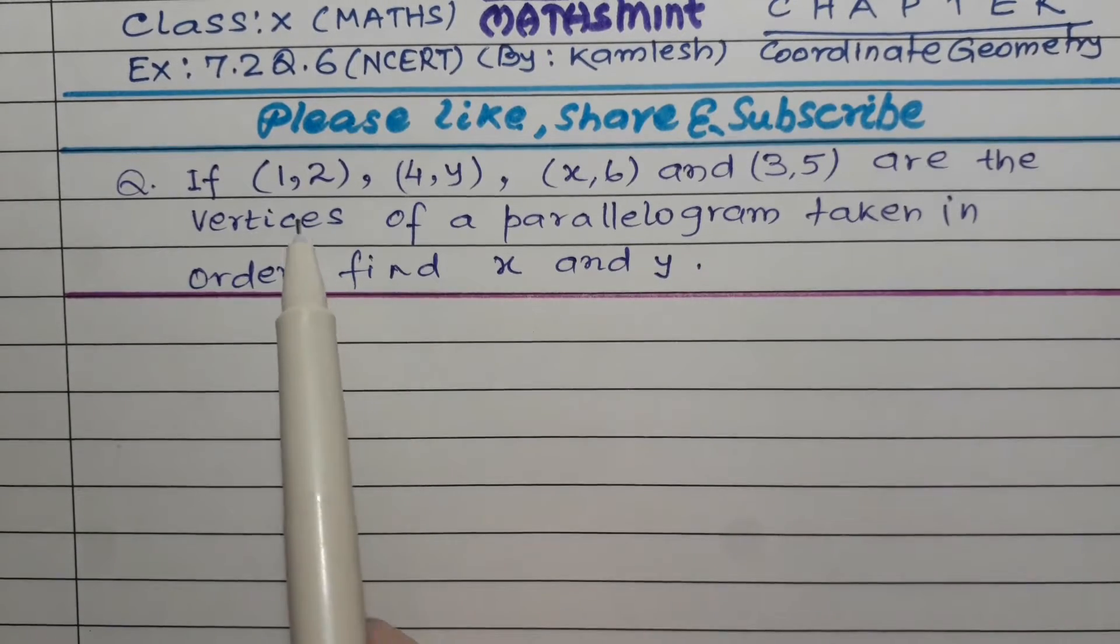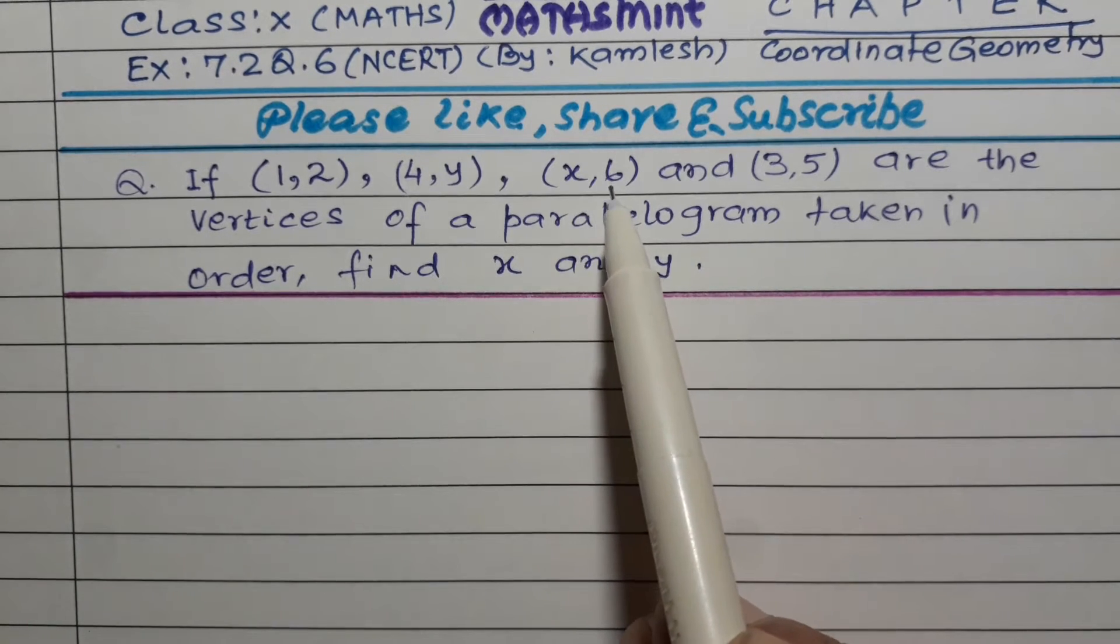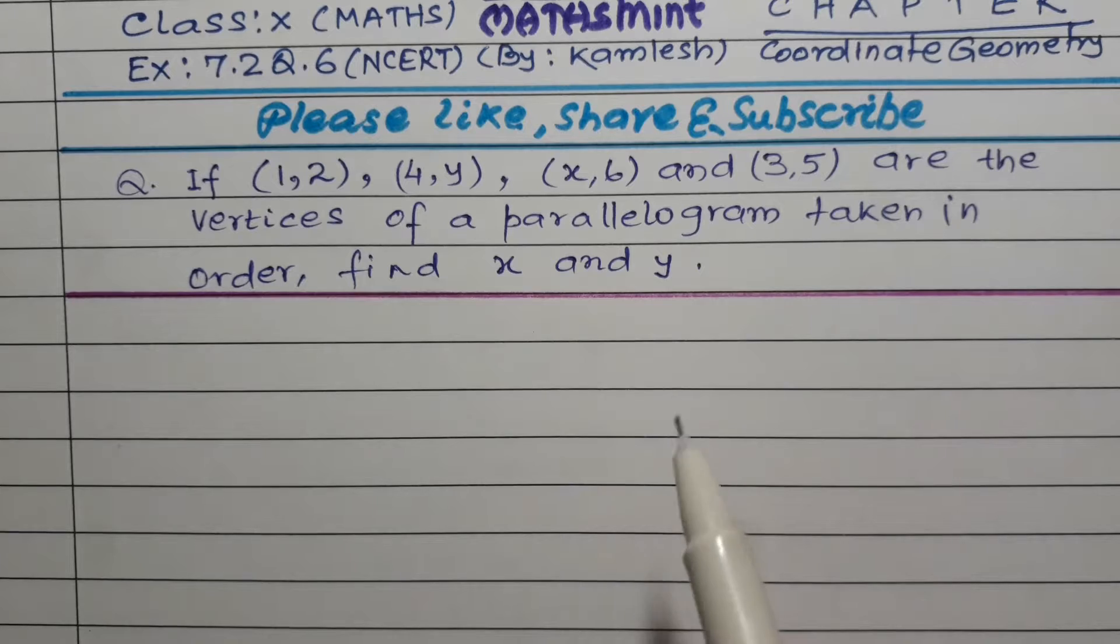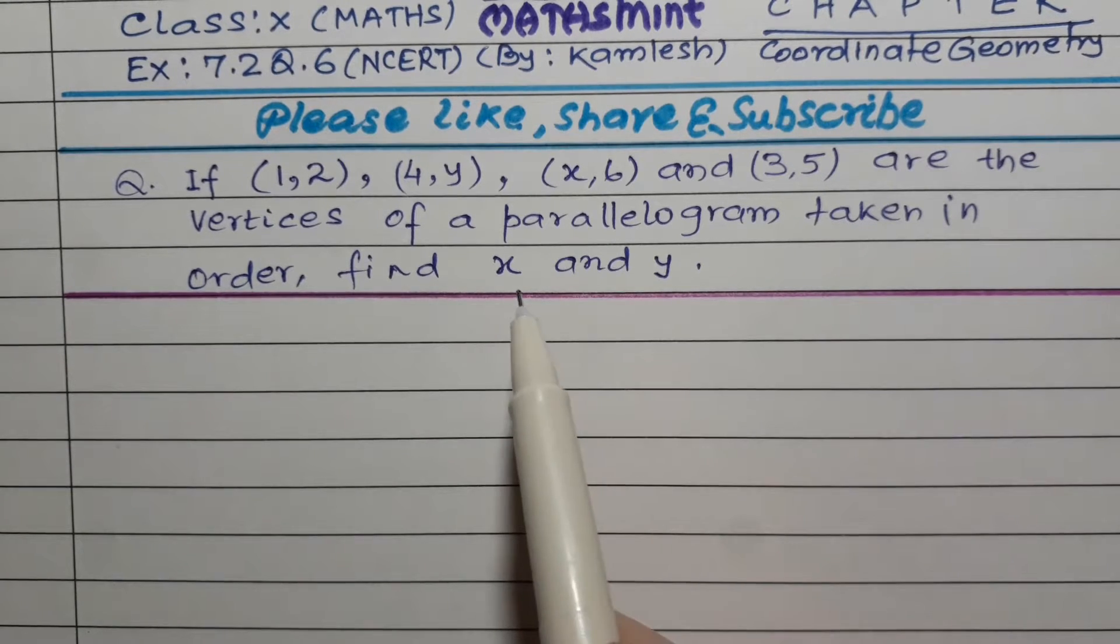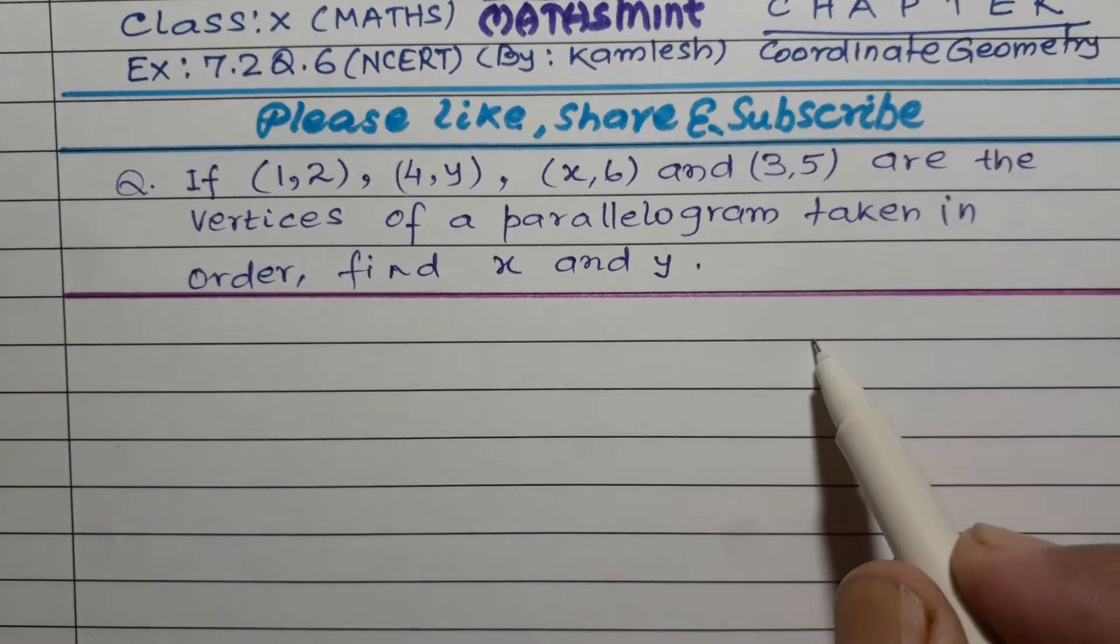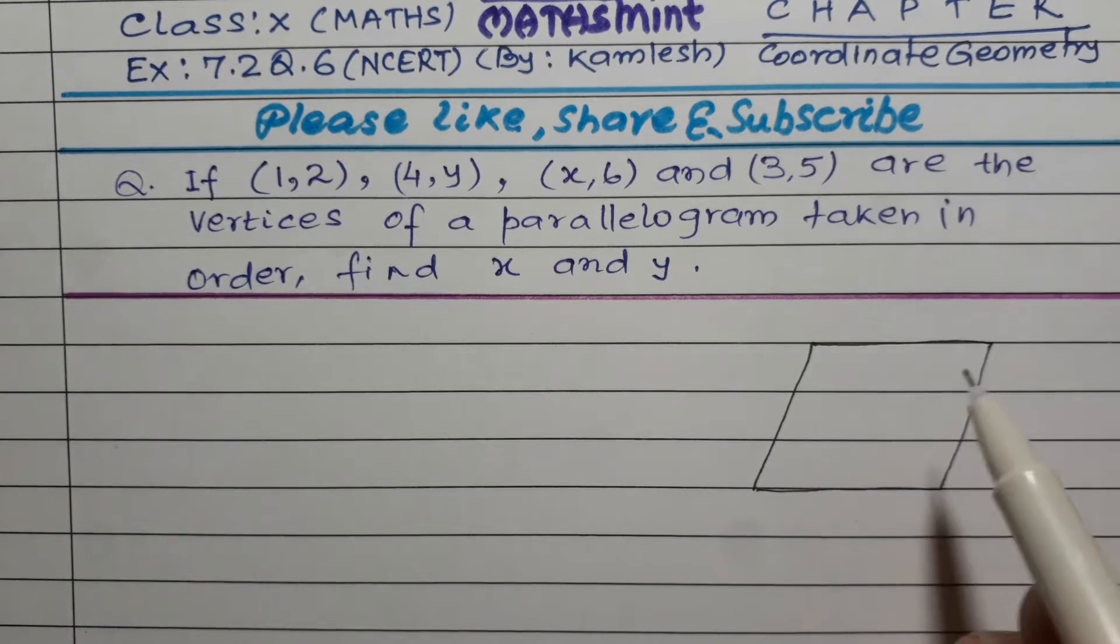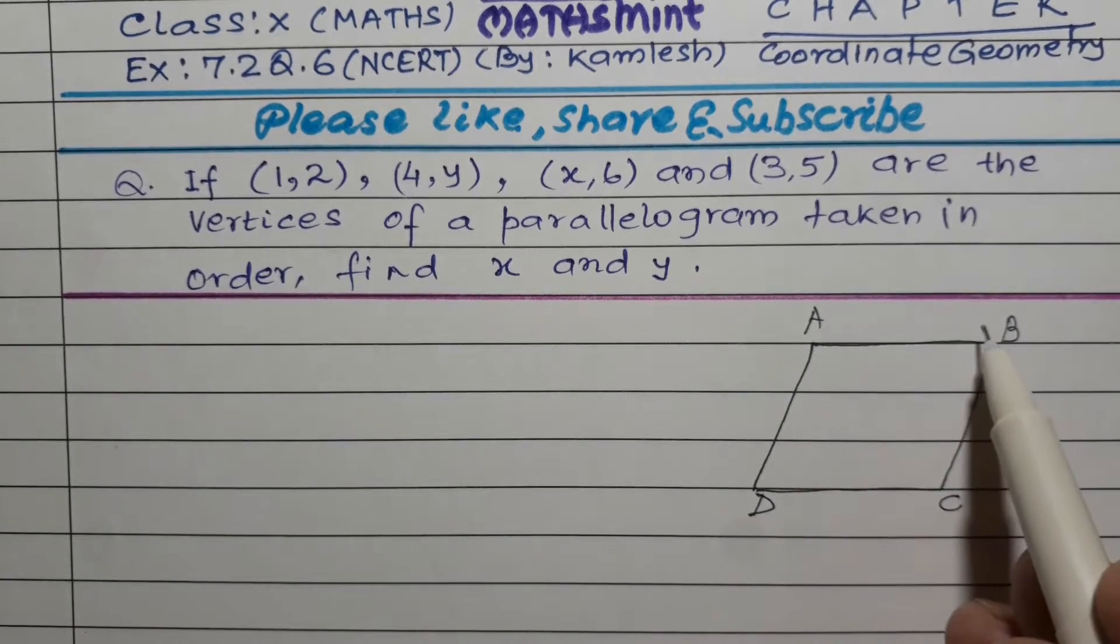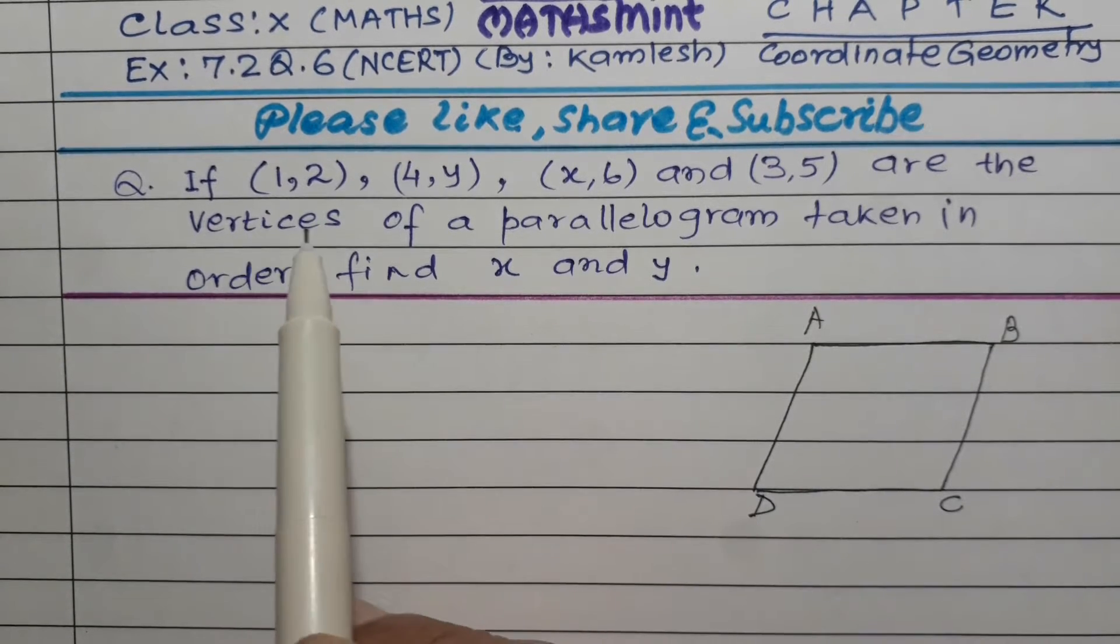The question is: if (1,2), (4,y), (x,6) and (3,5) are the vertices of a parallelogram taken in order, so it's a parallelogram with these vertices coordinates taken in order, which means naming is in the same order.